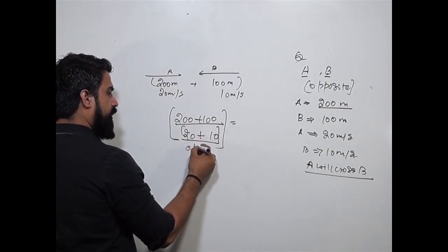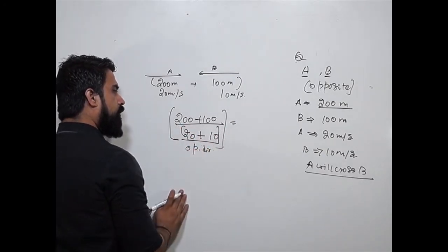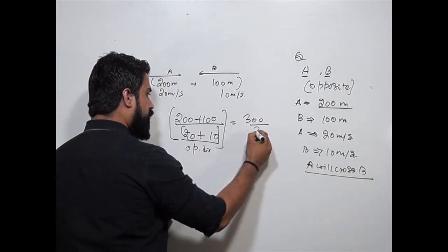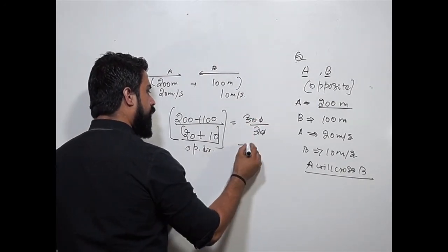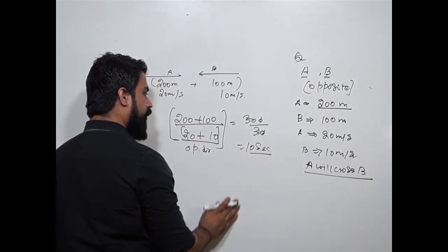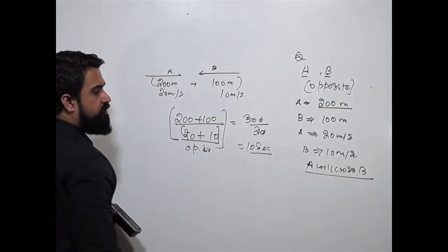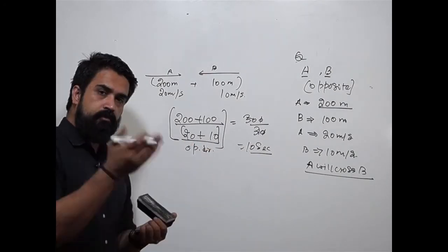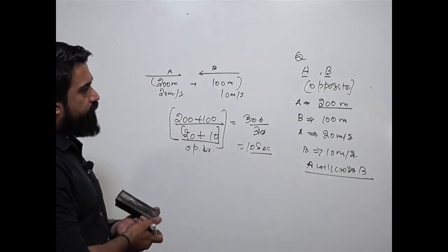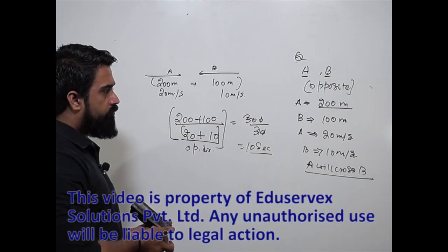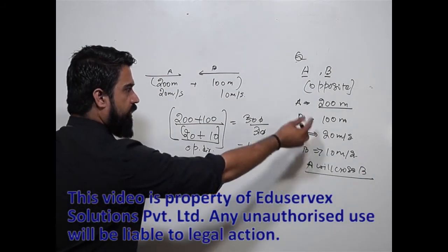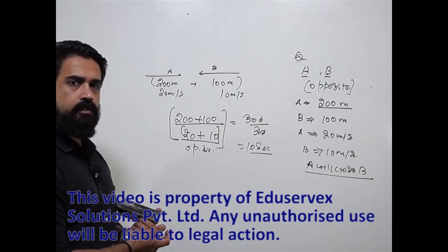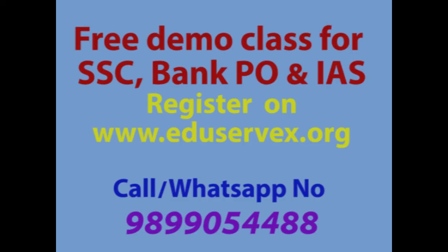So 300 divided by 30 gives 10 seconds. If they are moving in opposite directions, they take 10 seconds to cross each other. If they are moving in the same direction, the faster train crosses the slower one in 30 seconds. This is the second basic type of train problem.